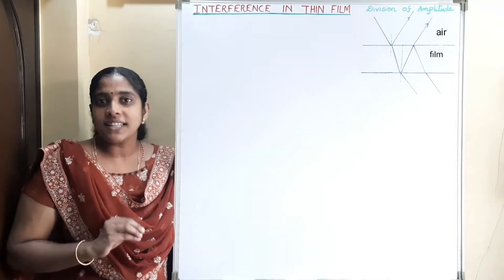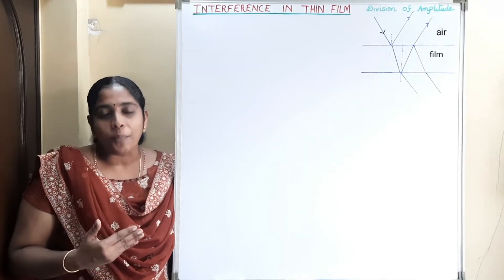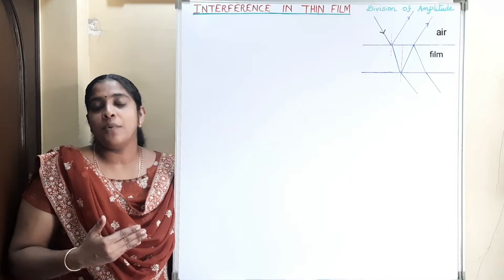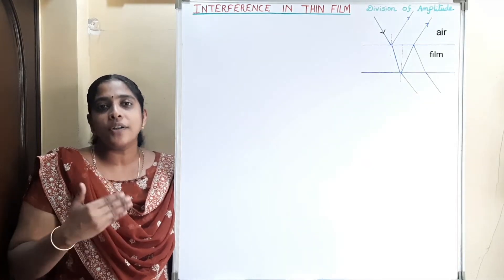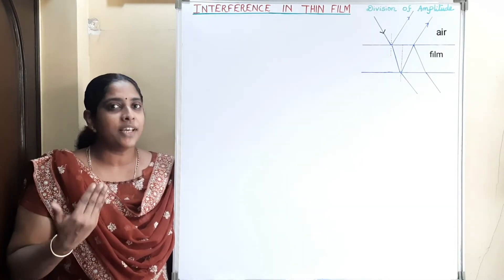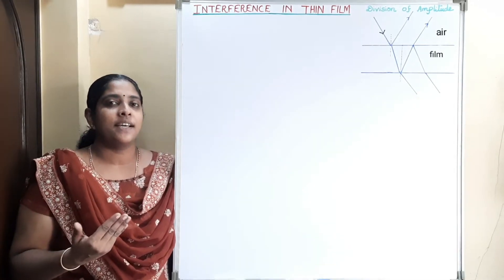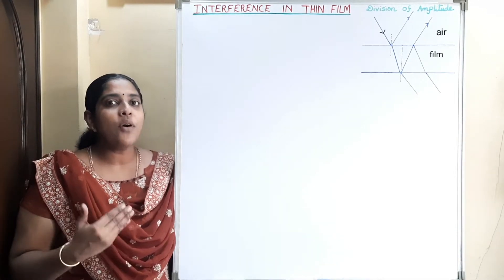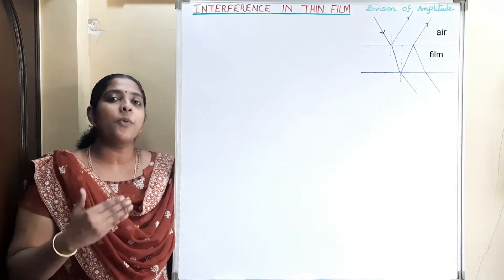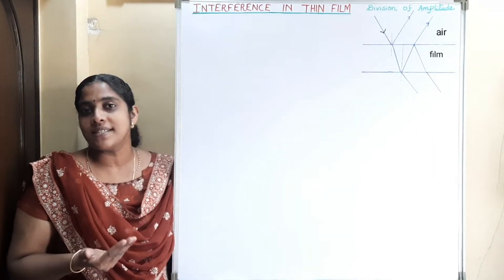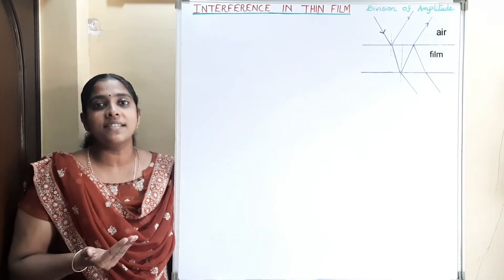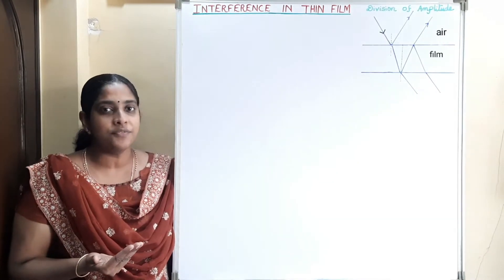What is a thin film? A thin film is an optical medium of thickness of the order of one wavelength of light. A film of thickness 0.5 to 10 micrometers we can consider as a thin film.